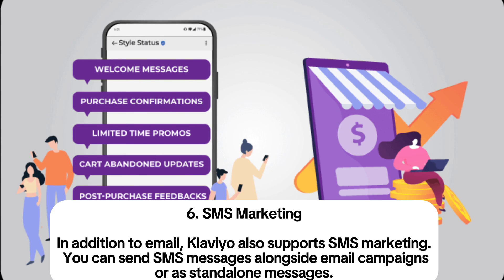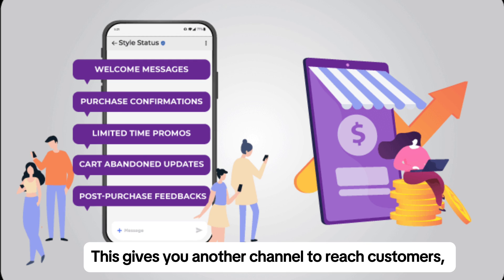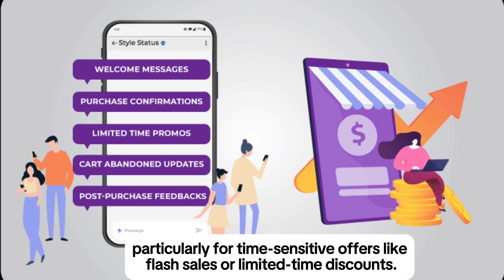Key feature 6: SMS marketing. In addition to email, Klaviyo also supports SMS marketing. You can send SMS messages alongside email campaigns or as stand-alone messages, giving you another channel to reach customers — particularly for time-sensitive offers like flash sales or limited-time discounts.